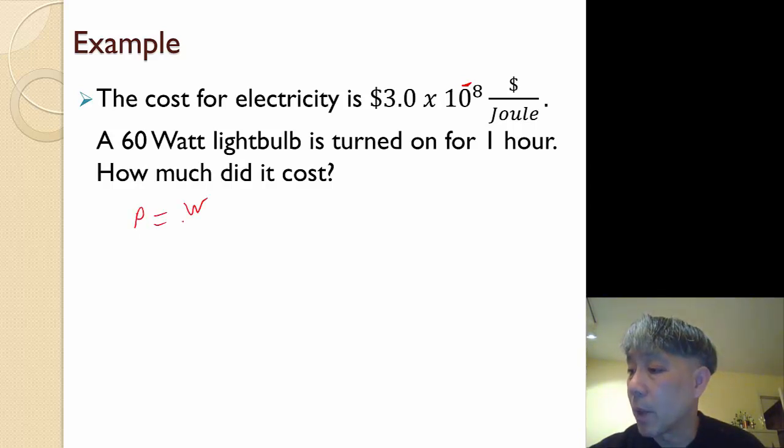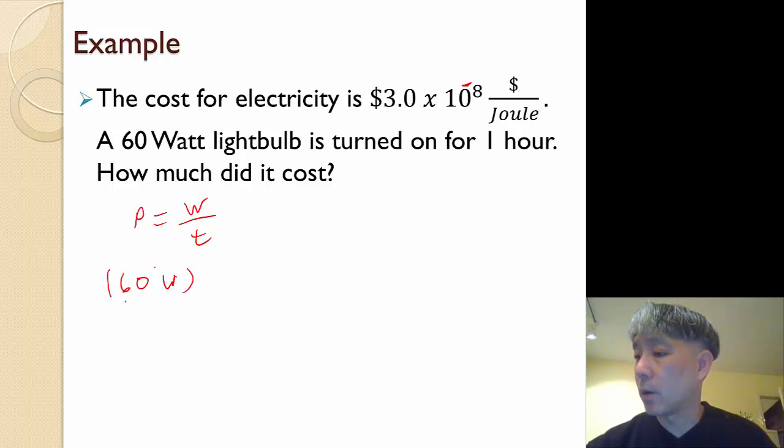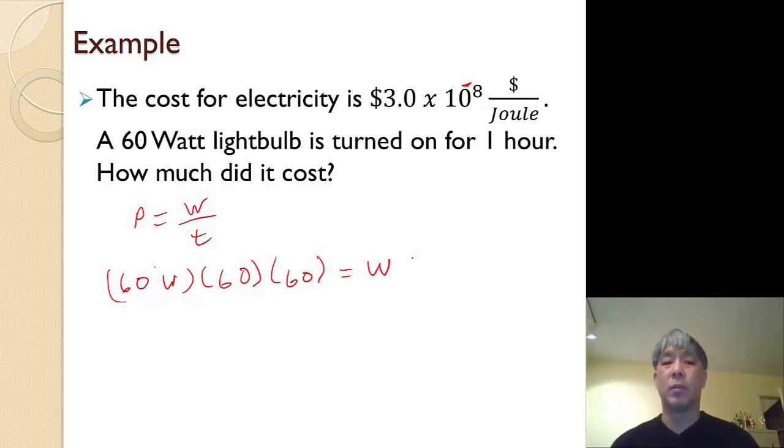Well 60 watt is power. So what we need to figure out is how many joules did this watt bulb use? 60 is the watts. Time needs to be converted to seconds, and there are 60 minutes in an hour and 60 seconds in a minute, and that's going to equal our work. How much work did this light bulb actually do? So it's 60 times 60 times 60.